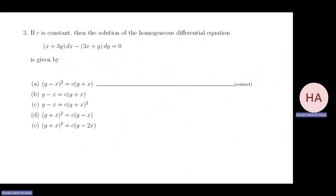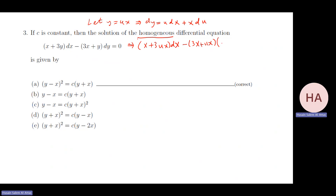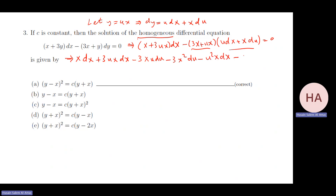We'll finish with this one. Since it's homogeneous, we let y equal ux, which implies dy equals u dx plus x du. Plugging in, we get (x plus 3ux)dx minus (3x plus ux)(u dx plus x du). Expanding: x dx plus 3ux dx, then with the minus sign: minus xu du minus 3x² du minus u²x dx minus ux² du equals zero.